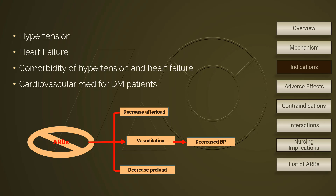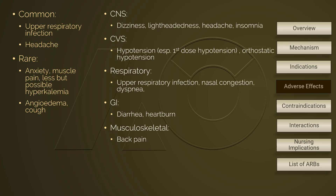ARBs belong to the category of antihypertensive medications. Their therapeutic mechanism warrants usage in patients with hypertension and heart failure. Clinically, ARBs are often prescribed when patients do not tolerate the adverse effects caused by ACE inhibitors. ARBs share very similar adverse effects as ACE inhibitors, but the key differences are that angioedema and cough are rarely associated with ARBs. Also, patients using ARBs might experience back pain.